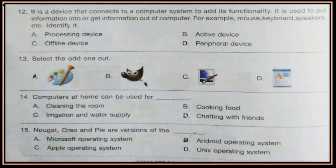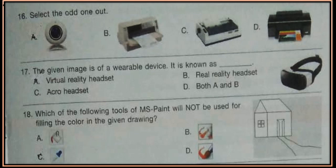Question 14. Computers at home can be used for: cleaning the room, cooking food, irrigation and water supply, or chatting with friends. Question 15. Oreo and Pie are versions of which operating system — Microsoft, Android, Apple, or Unix operating system?